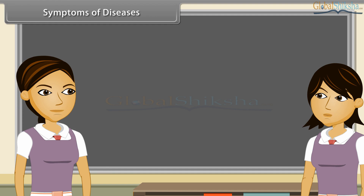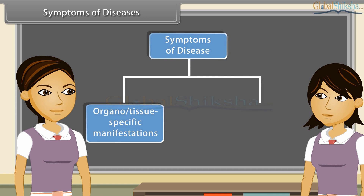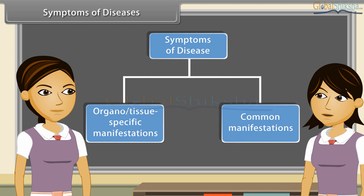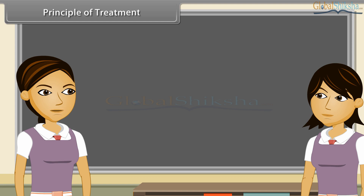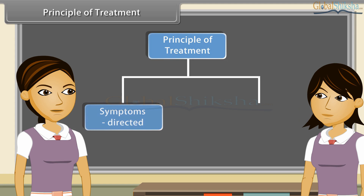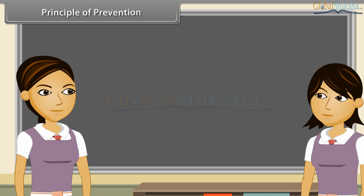Symptoms of diseases are of two types: organ or tissue specific manifestations and common manifestations. The principles of treatment of various diseases are symptom directed and pathogen directed.